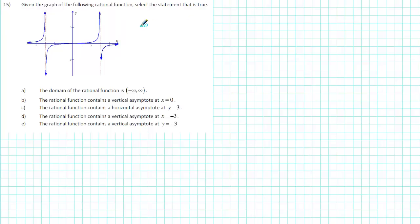Given the graph of the following rational function, select the statement that is true. First, read over the statements and identify the key terms. The key terms are domain, vertical asymptote, and horizontal asymptote.